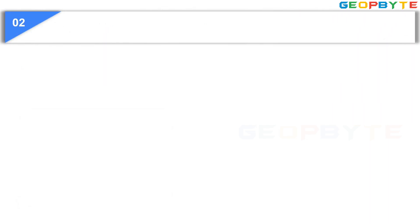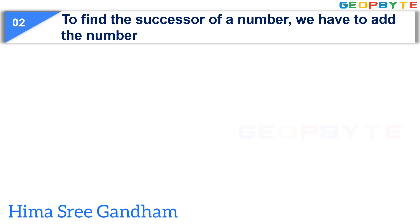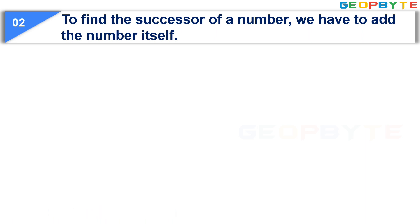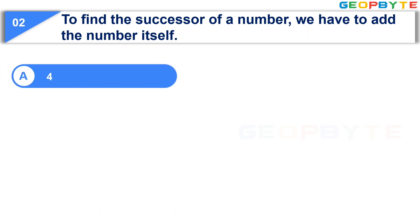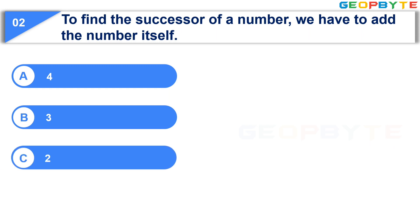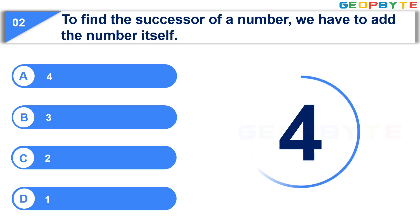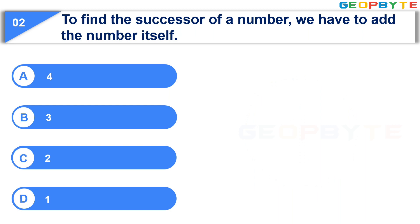Moving to the second question: To find the successor of a number, we have to add the number itself. Option A: 4. Option B: 3. Option C: 2. Option D: 1. Your time starts now. Your time is up and the correct answer is Option D: 1.